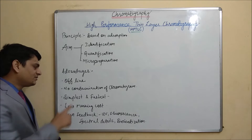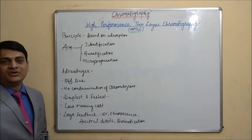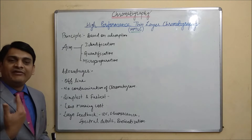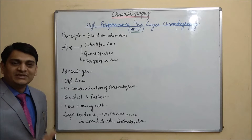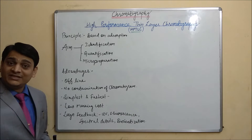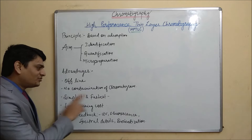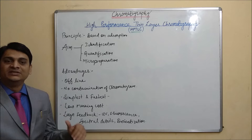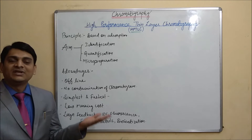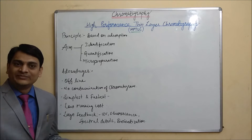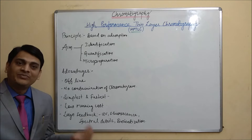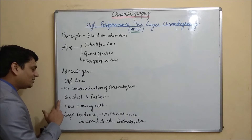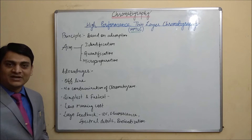The second advantage is no contamination of the chromatogram. In HPTLC, every time we use a new HPTLC plate, so there are no chances of contamination of the chromatogram. But in column chromatography or HPLC, we use the same column for various samples, so there may be chances of contamination. This is a key advantage of HPTLC.